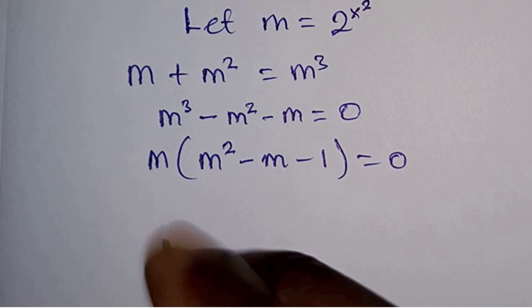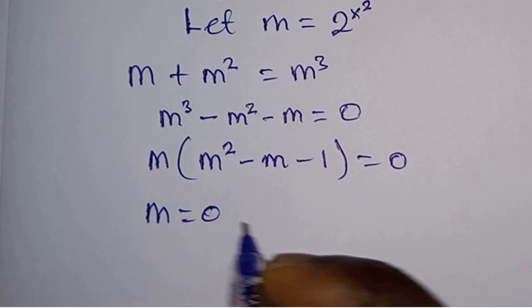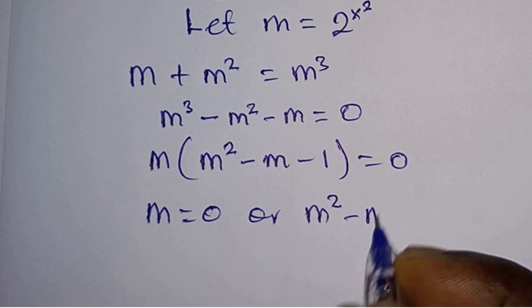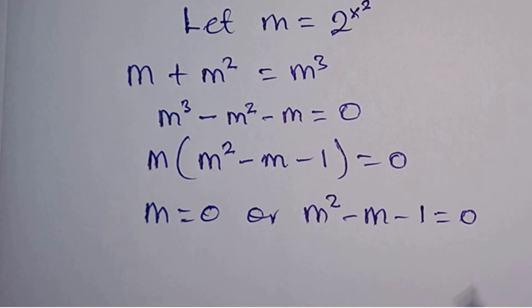So from here we can say that m = 0 or m² - m - 1 = 0.